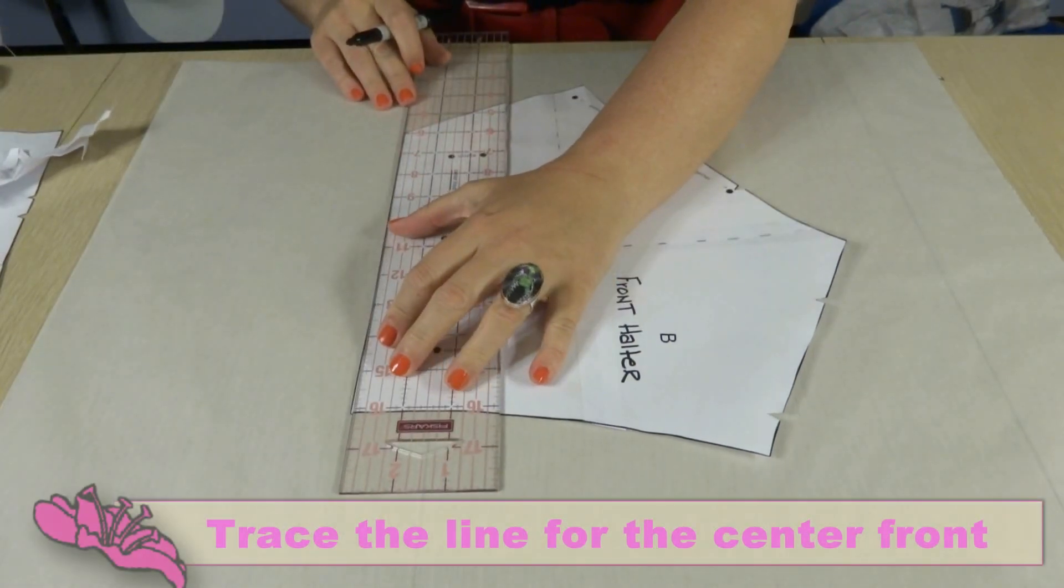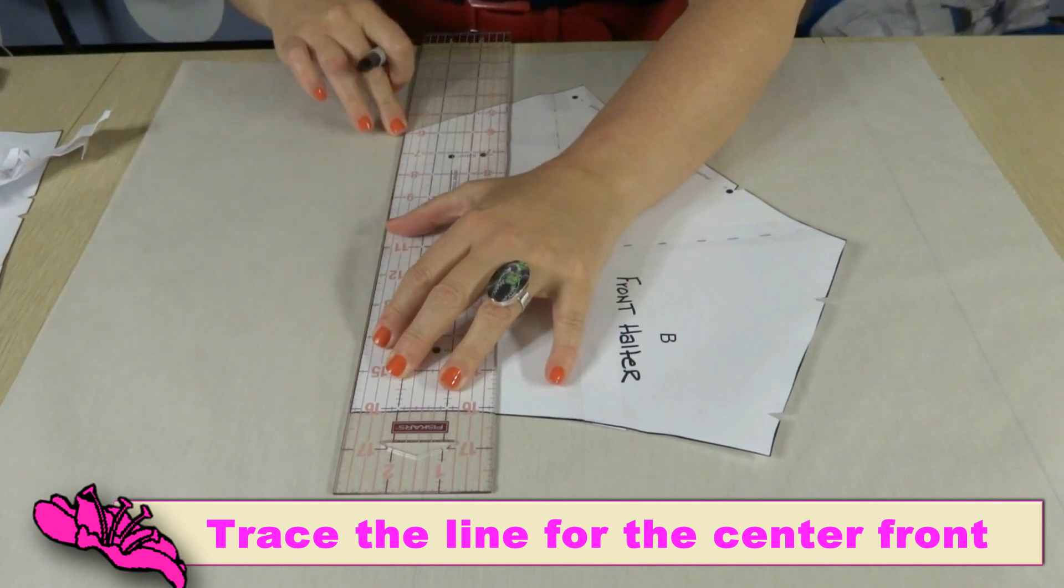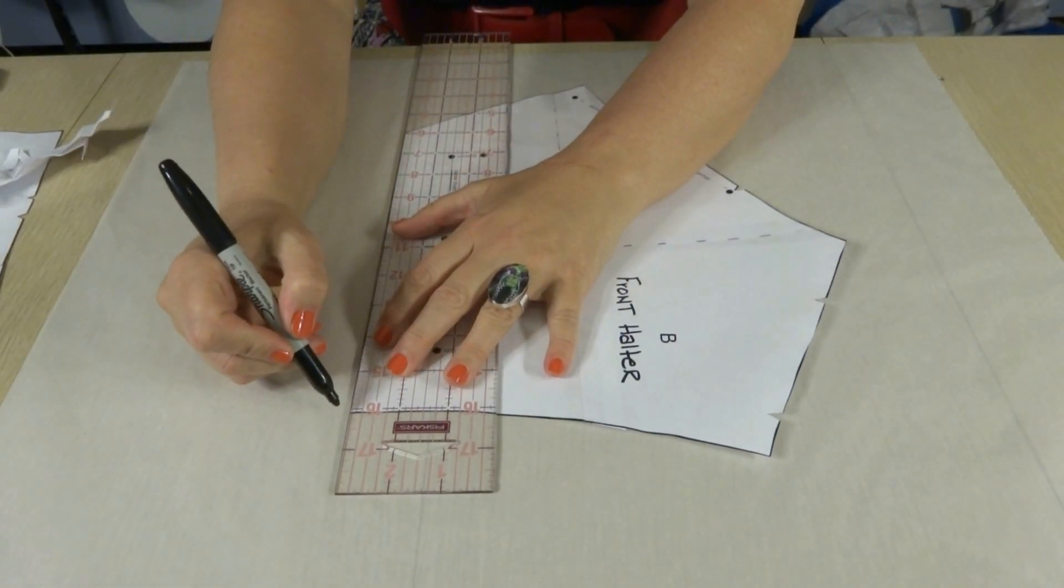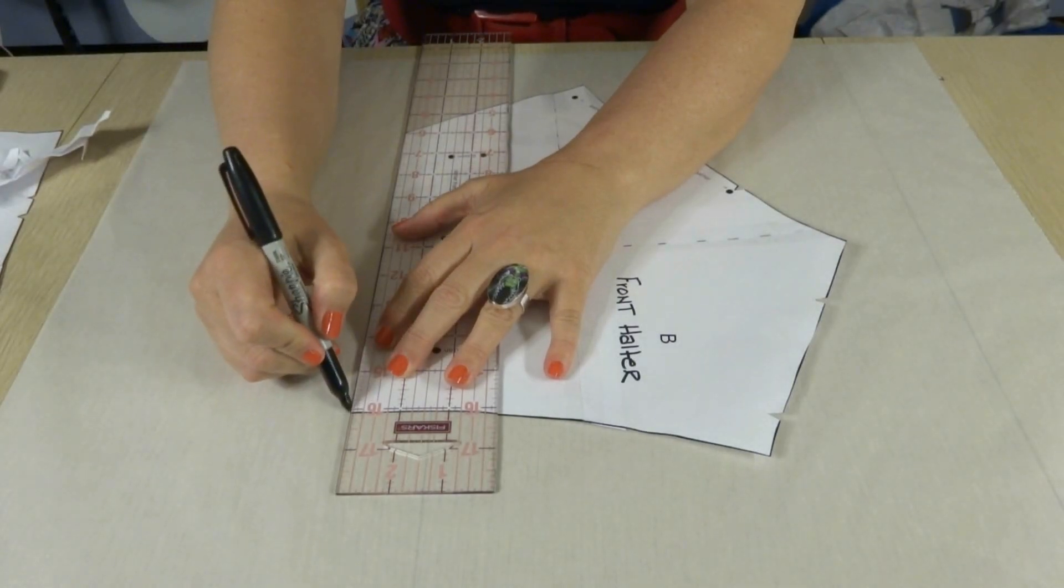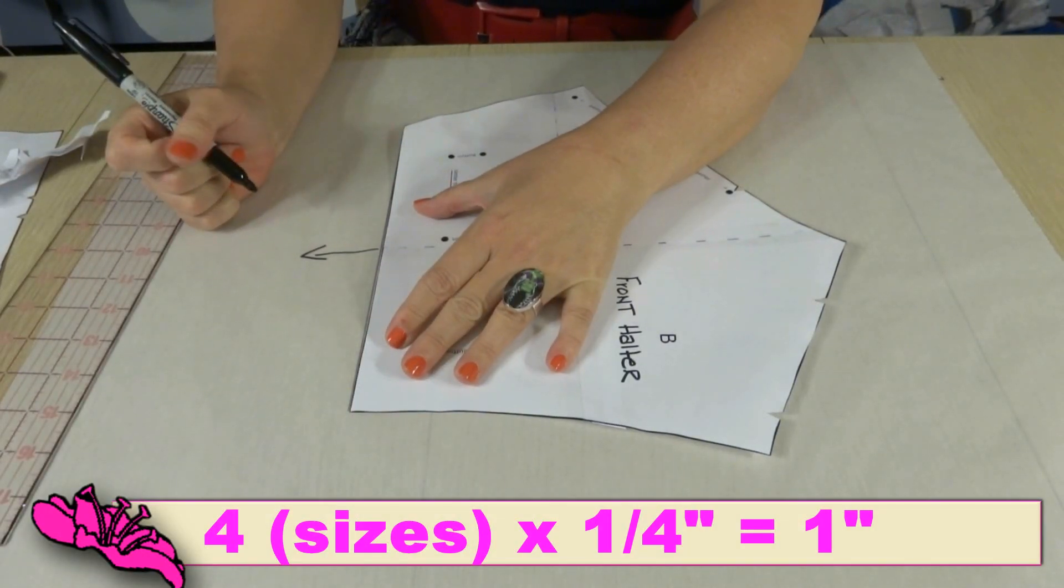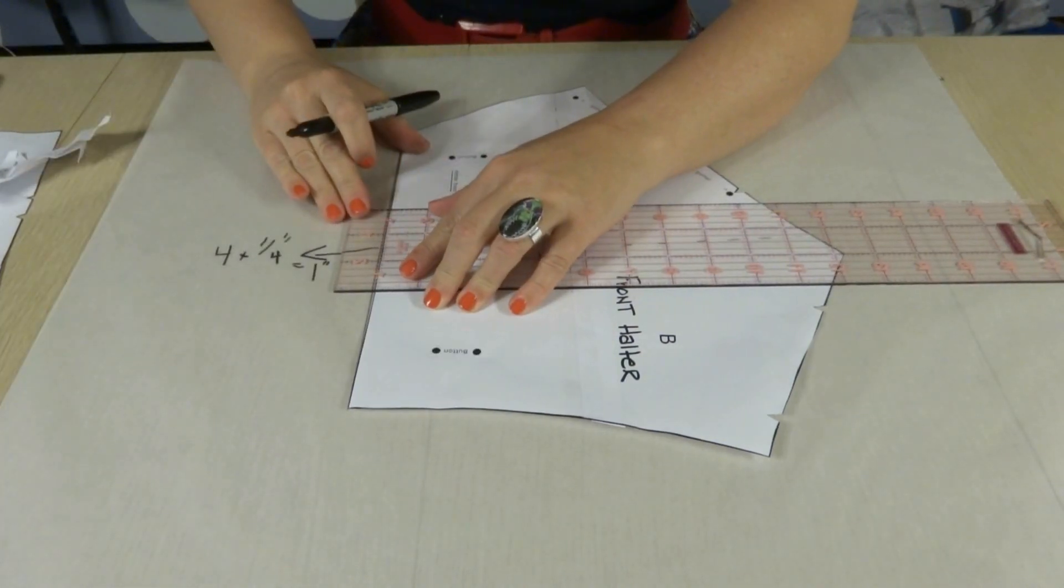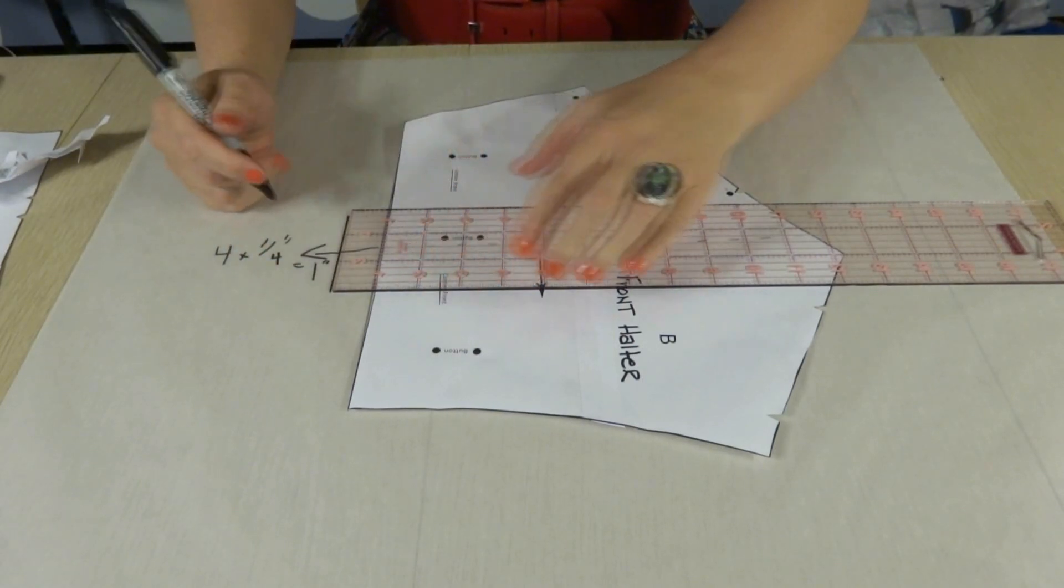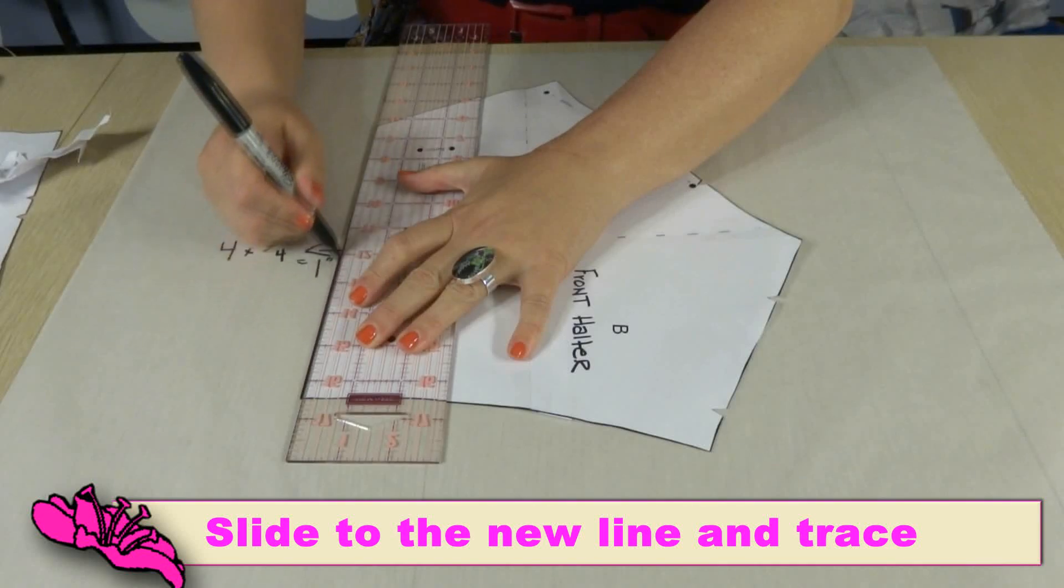Find the center front of your pattern piece, line up your ruler, and then trace the line. This is your starting point for all of the movements you make on your resizing. Take our pattern and we're going to move it a quarter of an inch for every size that we are moving this up. Take our ruler and measure one inch. Slide the pattern piece up to the new line and draw the full line.